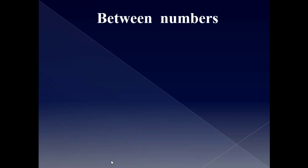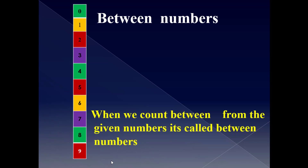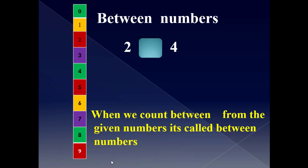Between numbers — what do you mean by between numbers? When we count between from the given numbers, it's called between numbers. Which number will come between 2 and 4? You have to circle 2 and 4, then you will get the number 3. 3 will come between 2 and 4.